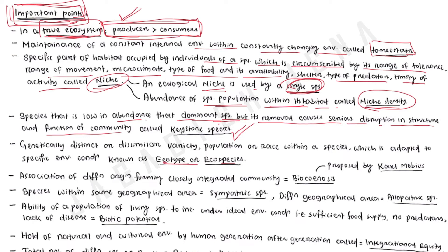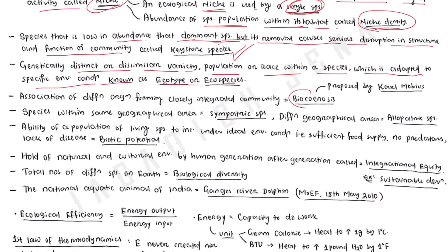Eco type or eco species is the genetically distinct or dissimilar variety, population, or race within a species that is adapted to a specific environment. Biocoenosis was proposed by Carl Mobius — it is the association of different organisms forming a closely integrated community. Sympatric species are species within the same geographical area; allopatric species are species present in different geographical areas.